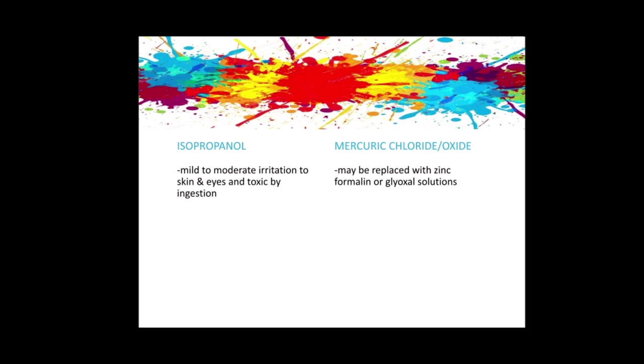Isopropanol can cause mild to moderate irritation of the skin and eyes, and is toxic by ingestion. Mercuric chloride and mercuric oxide can cause severe irritation of the eyes and skin, and are corrosive to metals because they contain mercury. Most processing solutions will be contaminated with mercury if specimens are fixed in B5, Helix, or zinc Carnoy's fixative. Reagents used to dezincurize sections will release mercury and must not go through drain disposal. To avoid expensive disposal, mercuric fixatives may be replaced with zinc formalin or glyoxal solutions.